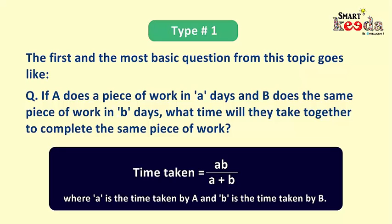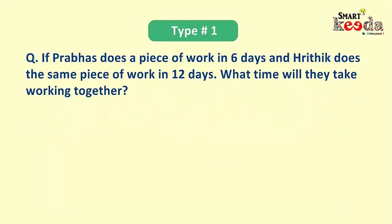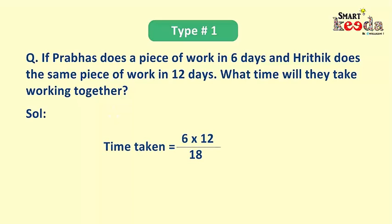Let's apply this: if Prabhast does a piece of work in 6 days and Hrithik does the same in 12 days, time taken working together = (6 × 12) / (6 + 12) = 72 / 18 = 4 days. Wasn't it simple? Let's now take an example of the second variant of Type 1 questions.